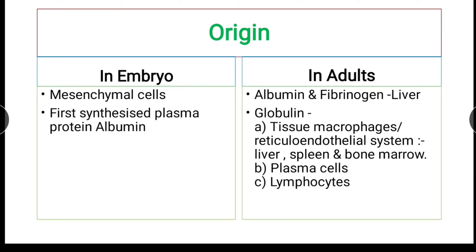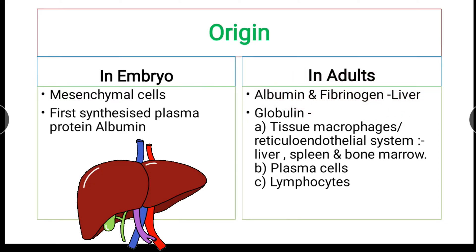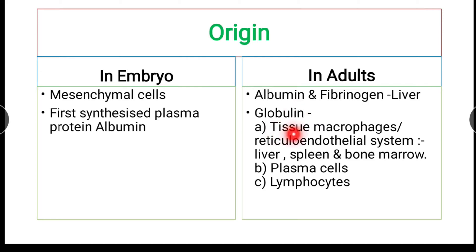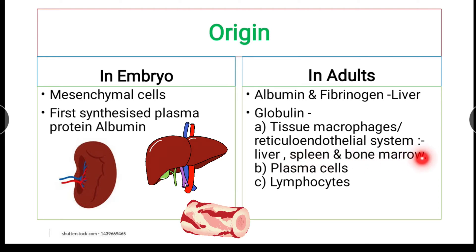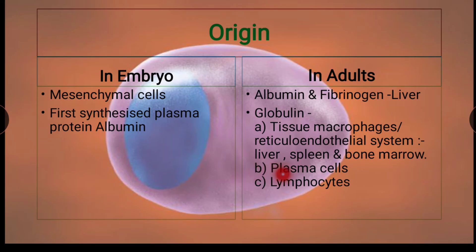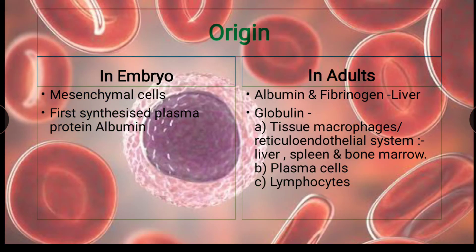Origin refers to the site of synthesis of plasma proteins. During embryonic life, mesenchymal cells synthesize plasma proteins, and albumin is the first plasma protein to be synthesized. In adults, albumin and fibrinogen are synthesized in the liver, whereas globulin is synthesized by tissue macrophages or the reticuloendothelial system of the liver, spleen, and bone marrow. It is also synthesized by plasma cells and lymphocytes.